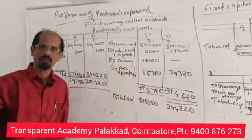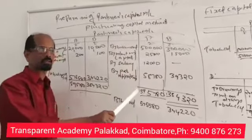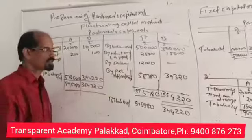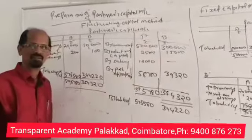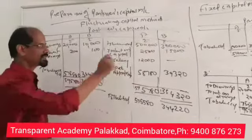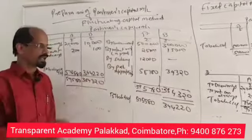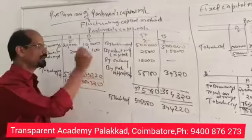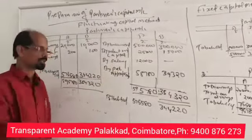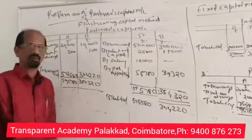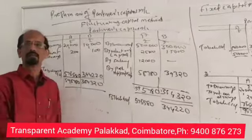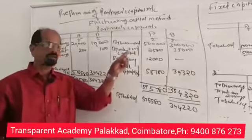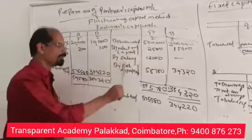The journal entry is: Interest on Capital Account debit, To B's Capital — so 'By Interest on Capital' is entered in the capital account. For salary, the entry is: Partner Salaries Account debit, To A's Capital — 12,000. Partner salary is entered as 'By Salary' in the capital account.